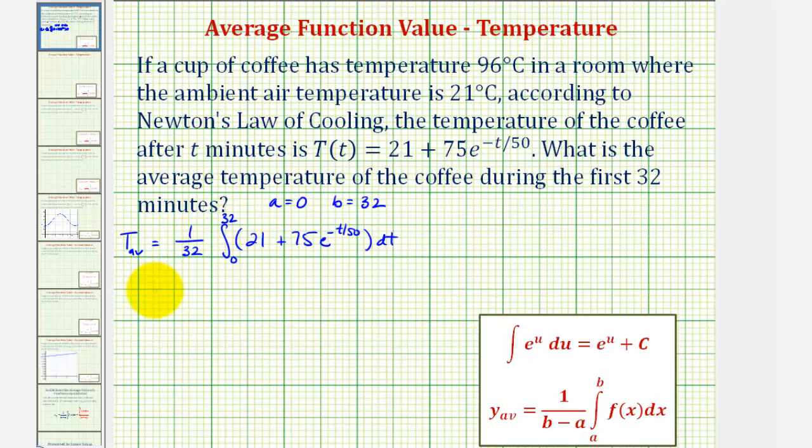Let's begin evaluating this. We'll begin by determining the antiderivative of 21 plus 75 times e raised to the power of negative t divided by 50. Notice to integrate the second term, we will have to perform U substitution.